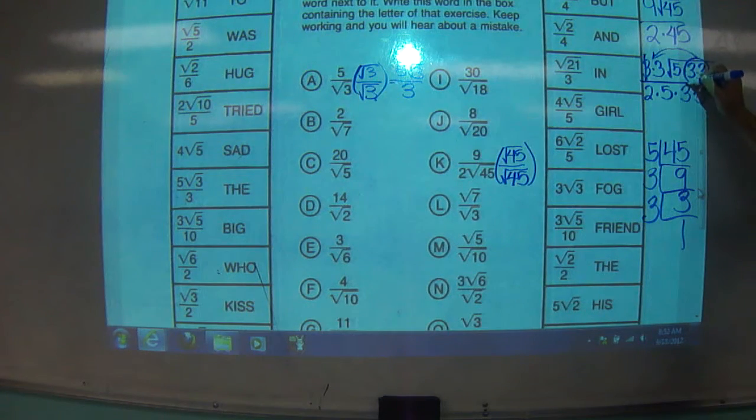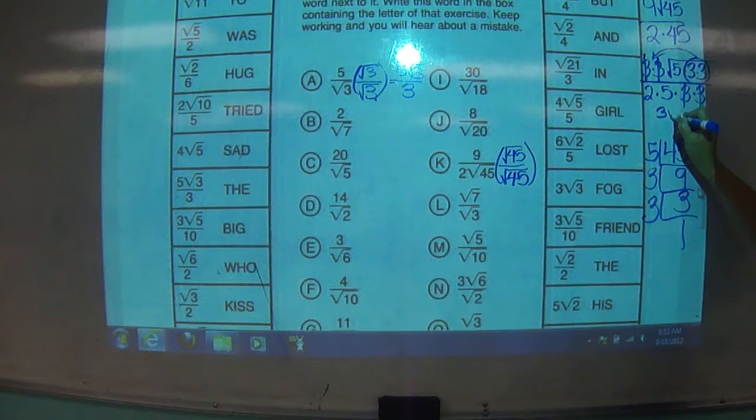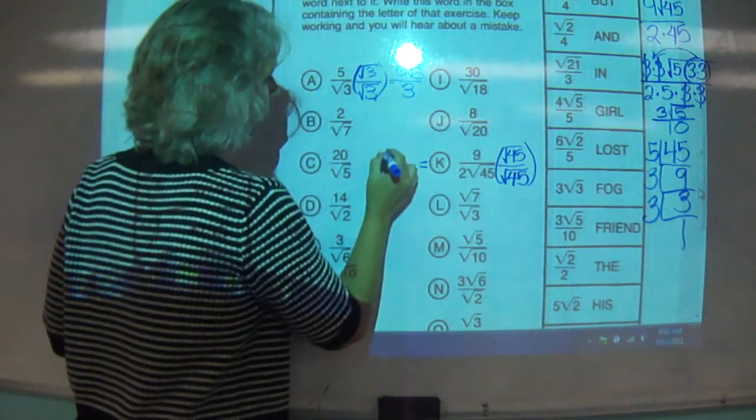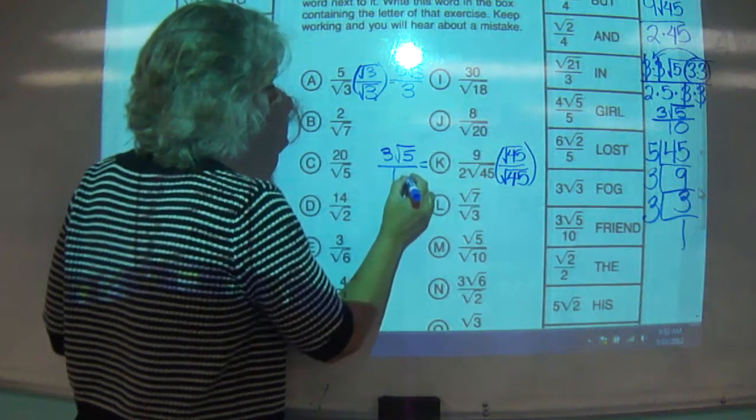So we've got a big one here, a big one here, a big one here and a big one here. This guy's going to come out so we get three root five over ten. So k equals three root five over ten.